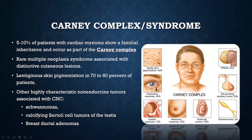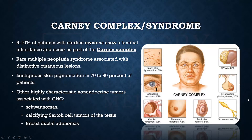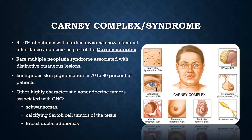I want to include one slide about a rare syndrome related to atrial myxoma — the Carney complex. This is an autosomal dominant disorder seen in 5% to 10% of patients presenting with cardiac myxomas. In addition to cardiac myxoma, these patients can develop cutaneous myxomas and tumors of the pituitary, testes, or breast. Most recognized are skin lesions — indigenous skin pigmentations — along with schwannomas, calcified Sertoli cell tumors of the testes, and breast ductal adenomas.